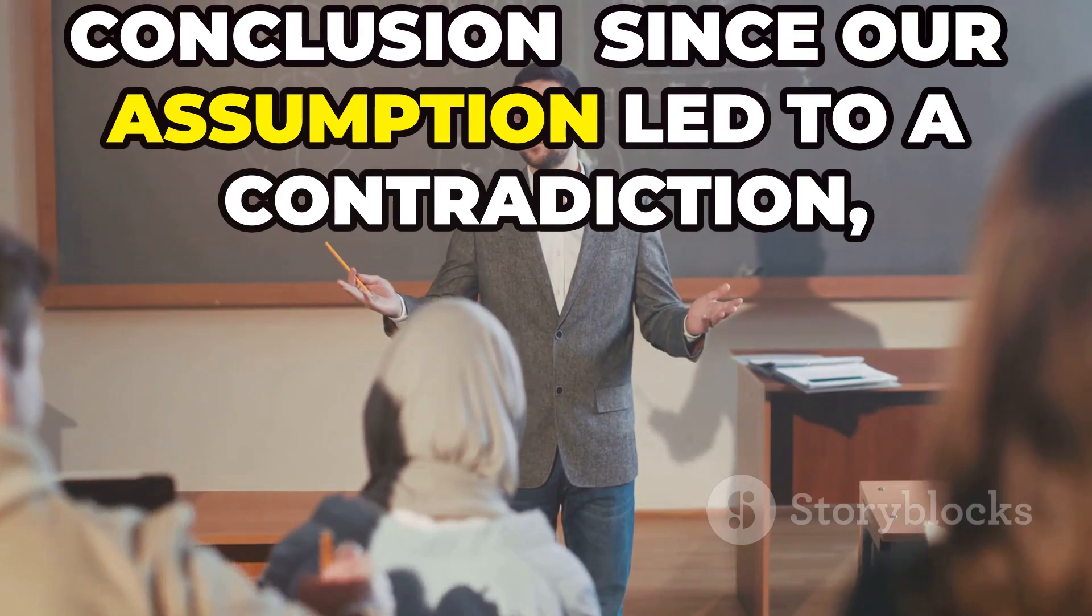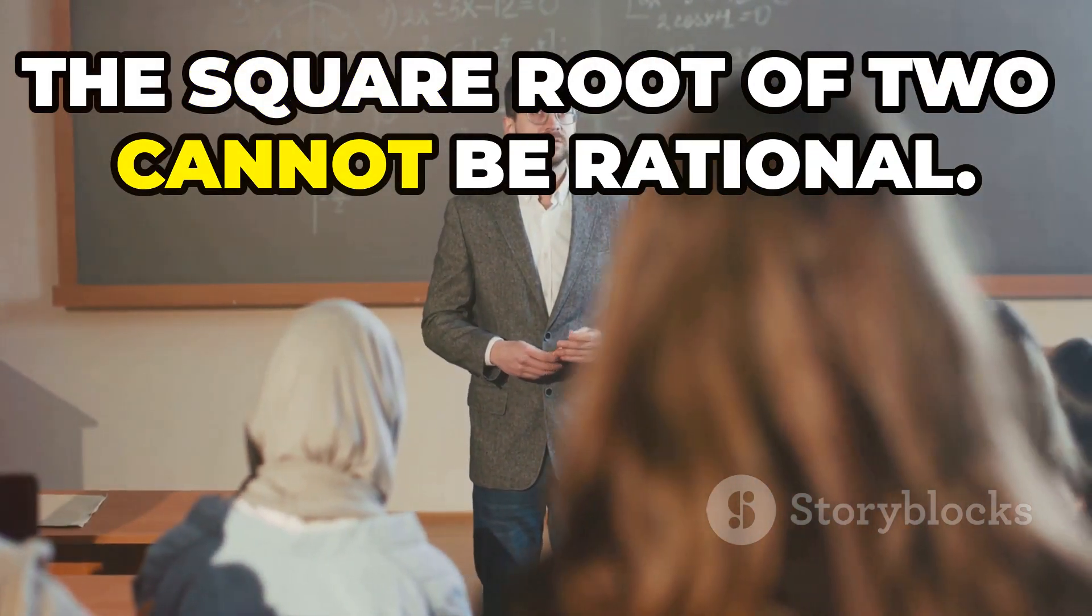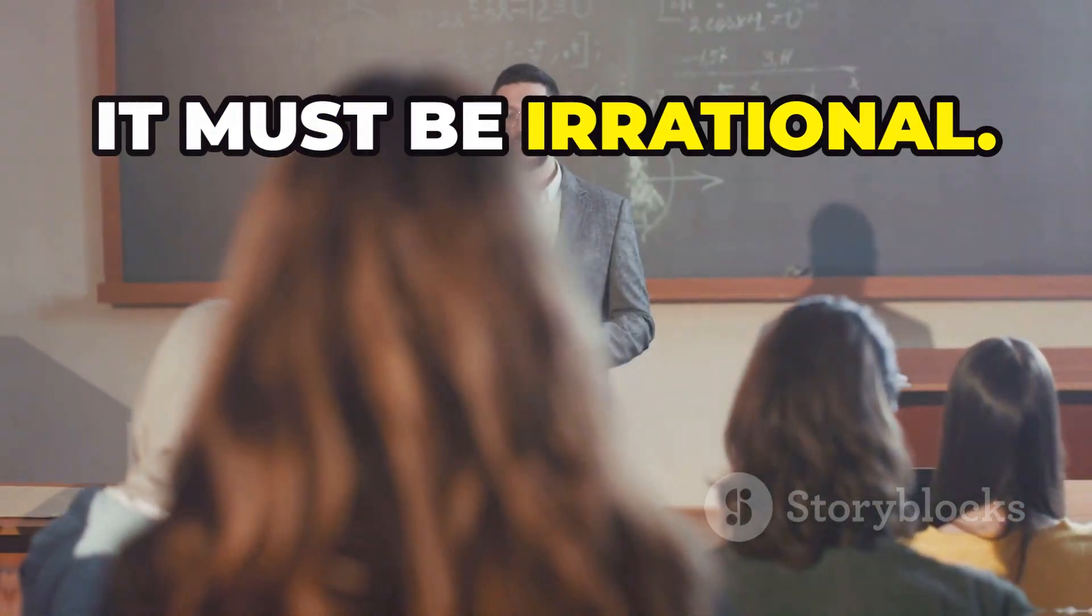Conclusion. Since our assumption led to a contradiction, the square root of 2 cannot be rational. Therefore, it must be irrational.